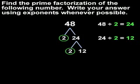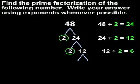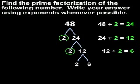Since 12 is not prime, we draw two new branches. Since 12 divided by 2 is 6, we know that 2 and 6 are factors of 12. So we write 2 and 6 at the bottom of the branches. Next, we circle any prime factors in the factor tree. Since 2 is prime, we circle 2.